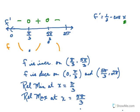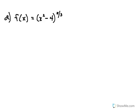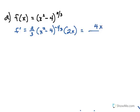Let's take a look at the same kind of problem, answering the same types of questions, but with a different type of function. This is the function x squared minus 4, the quantity to the 2 thirds. So once again, we need to find our derivative first. That's going to be 2 thirds times x squared minus 4 to the negative 1 third — we definitely need chain rule here — times 2x. Rewriting, and taking the negative 1 third power to the denominator, we get 4x over 3 times the quantity x squared minus 4 to the 1 third.